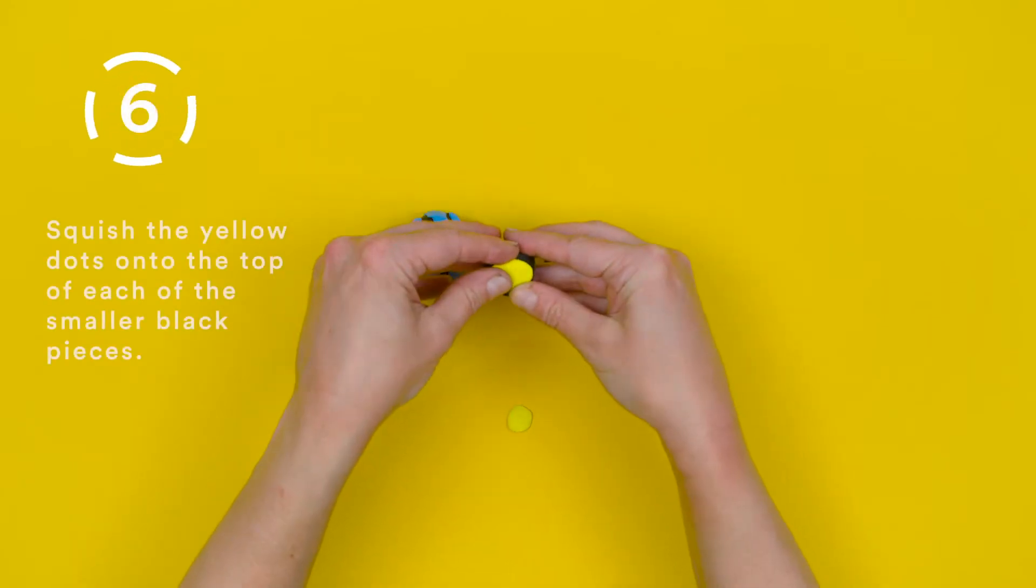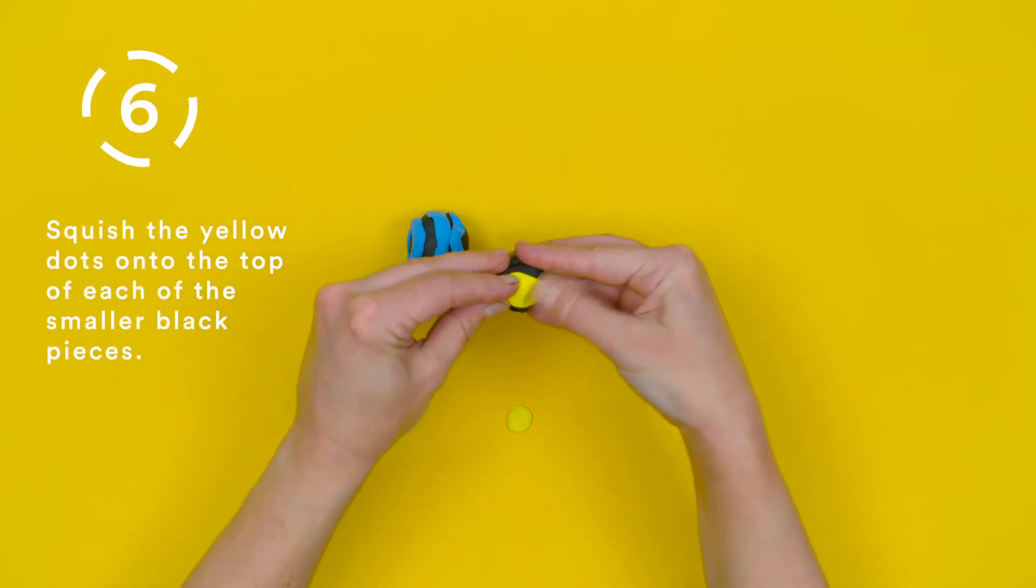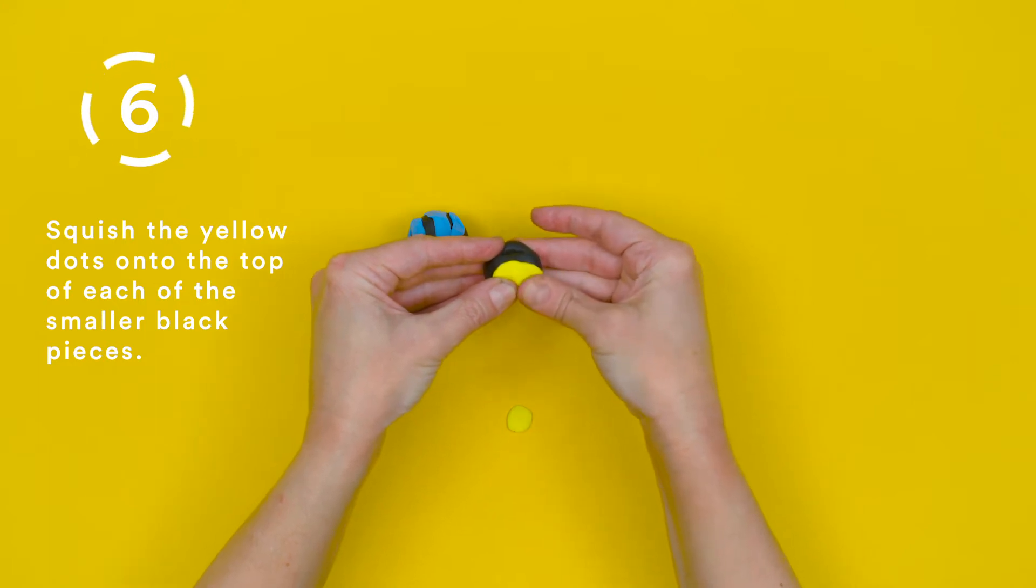Step 6. Squish the yellow dots onto the top of each of the smaller black pieces.